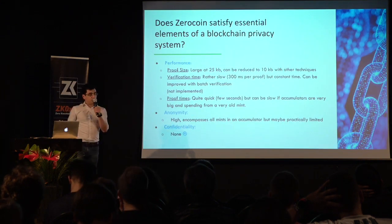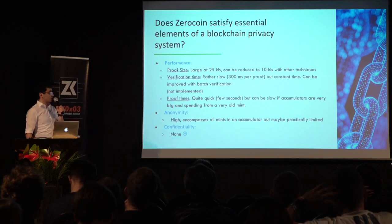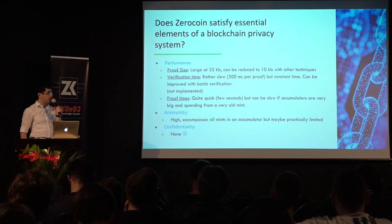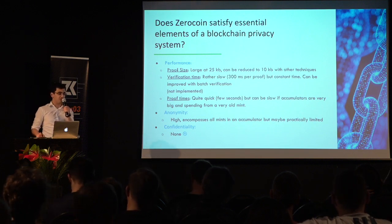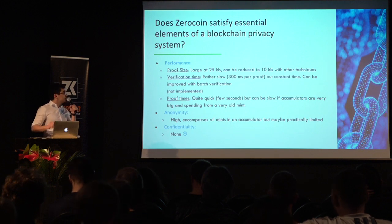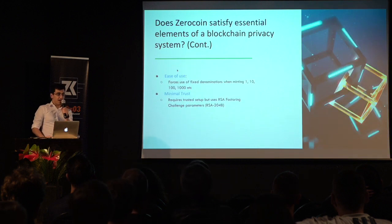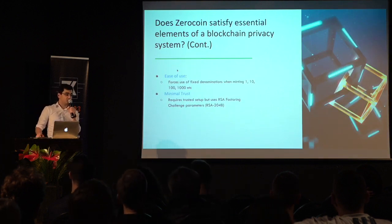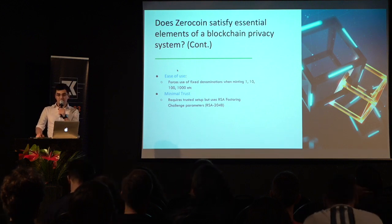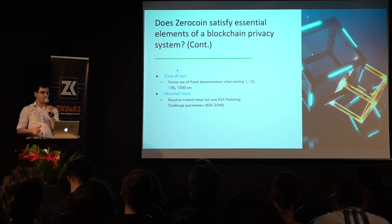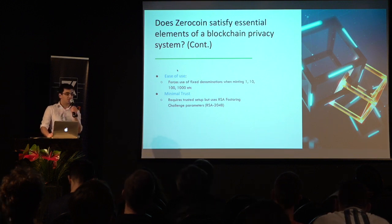But from the performance point of view, it has some drawbacks. The proof sizes are quite large — they take up to 25 kilobytes. The proof verification can take 300 milliseconds. And the size of the anonymity set should be limited to 10,000 due to practical issues. It doesn't enable confidential transactions of arbitrary amounts and still requires some type of trusted setup in order to generate the RSA parameters, although Zcoin found some smart workaround using the RSA factoring challenge parameters generated in 1991.